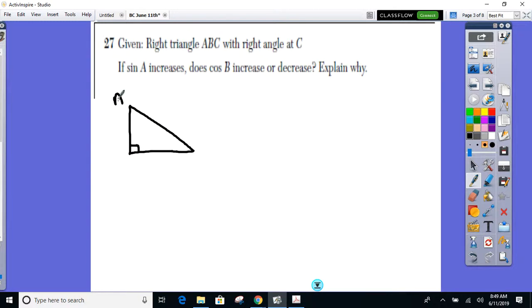So A and B are my two acute angles. And it's asking, if sine of A increases, what happens to the cosine of B? Well, in this particular problem, what do you know about these two values? What do you know about angles A and B? They have to add to 90, because that's our right angle and there's 180 degrees in a triangle. So I know these have to add to 90, which means if A and B add to 90, what do I know about sine and cosine?